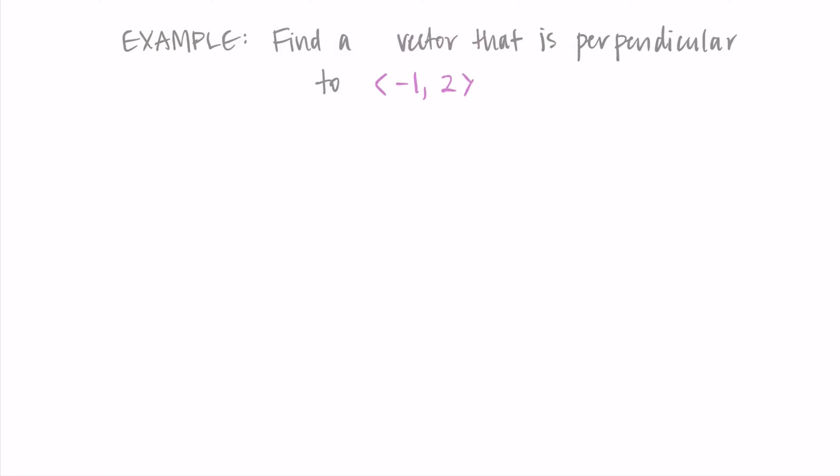So the particular way this problem was set up means that there are lots of possible answers to the example. We can make this more precise by adding in a word here. So let's instead say we want to find a unit vector that is perpendicular to the vector negative 1, 2.